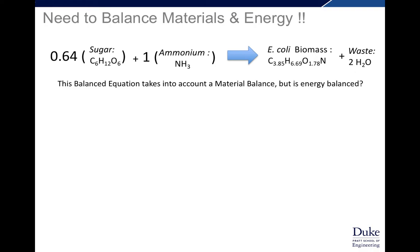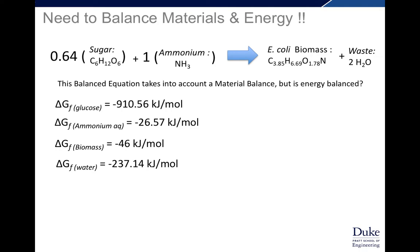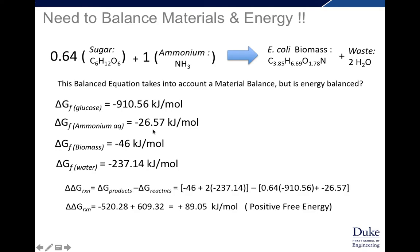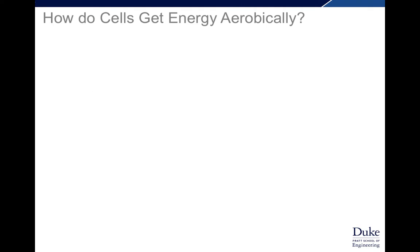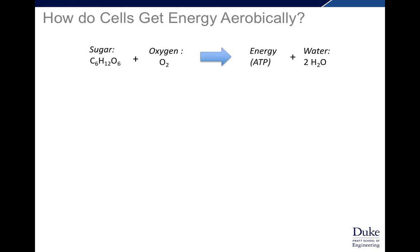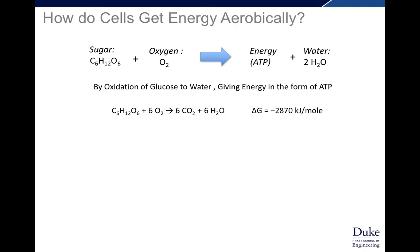We need to balance both materials — which we've already done — as well as energy, which is what we're missing. The balanced equation takes into account a material balance but is not energy balanced. If we look at the free energy balance: the free energy of the products (biomass and water) minus the free energy of the substrates (glucose and ammonia) gives a net positive free energy of 89.05 kilojoules per mole. Things with positive free energy are not spontaneous reactions, so this is not a viable synthesis for E. coli. How do cells get energy aerobically? They take sugar and oxygen and generate energy in the form of ATP and water.